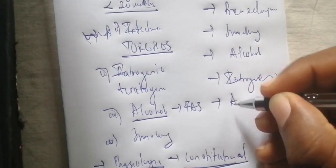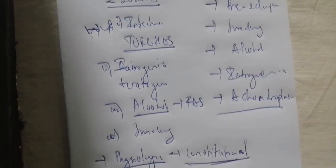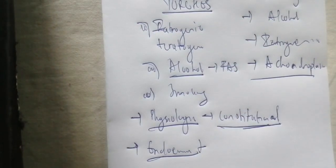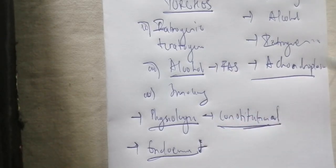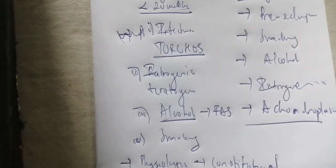Achondroplasia is also associated with asymmetric intrauterine growth restriction. Additionally, in asymmetric intrauterine growth restriction we can have endocrine abnormalities, such as hyposomatotropism, where there is low growth hormone production. Congenital abnormalities can also be associated with intrauterine growth restriction.